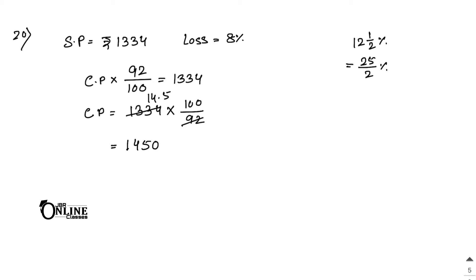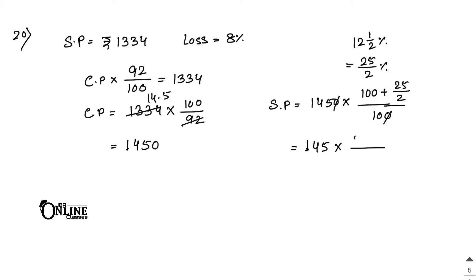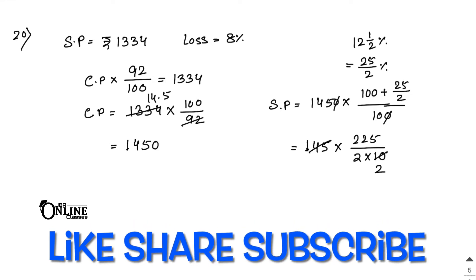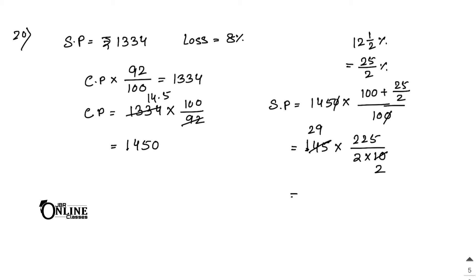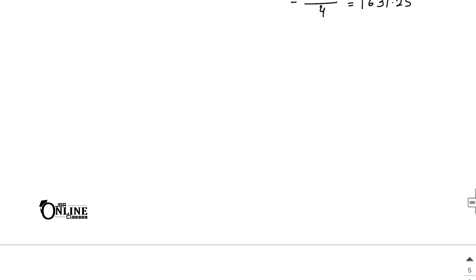CP equals 1,450. New SP equals 1,450 into (100 plus 25 by 2) divided by 100. The LCM is 2, giving 225 by 2 into 10. Multiplying 29 into 225 gives 6,525, and 6,525 divided by 4 equals 1,631.25 as your answer.